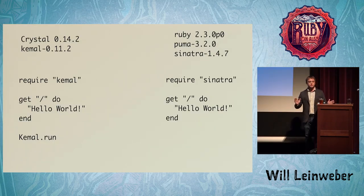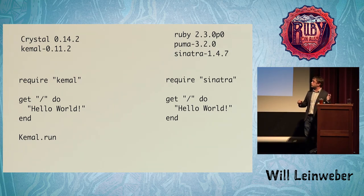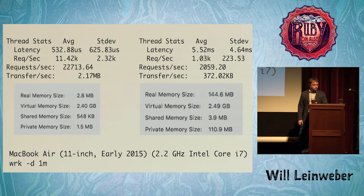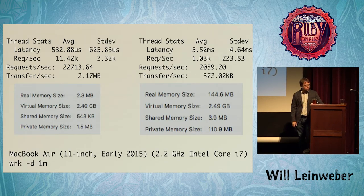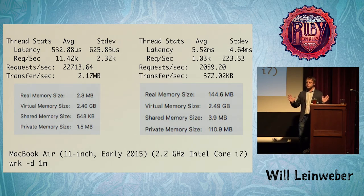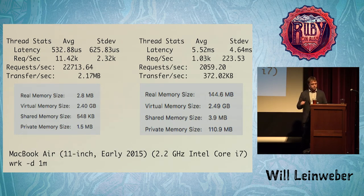And it's also very fast. Microbenchmarks — take them with a grain of salt of course — but on the left here is a Crystal program with a library that's a Sinatra clone, and on the right there's just regular Sinatra. Running it with Puma and using the wrk tool to generate load, you can see it's an order of magnitude faster, an order of magnitude less latency, and two orders of magnitude less RAM. Real applications would be very different, but it's pretty cool.